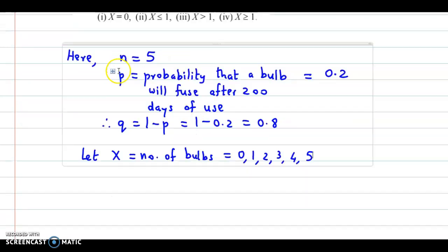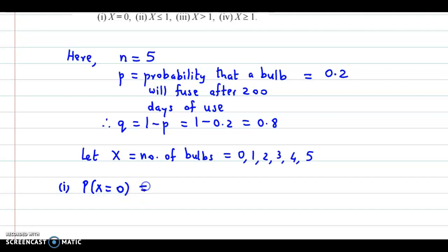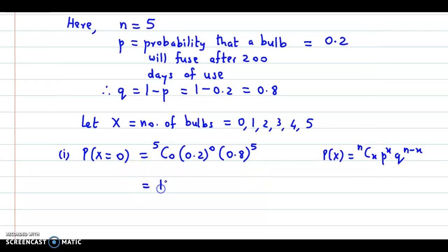First, find the probability of X equal to 0. We use the formula for P(X) in binomial distribution: nCx times p raised to x times q raised to n minus x. So we have 5C0 times 0.2 raised to 0 times 0.8 raised to 5 minus 0, which is 5. Simplifying further, 5C0 is 1, 0.2 raised to 0 is also 1, so our final answer is 0.8 raised to 5.